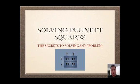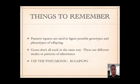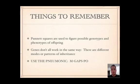Solving Punnett squares — the secrets to solving any problem. Things to remember: Punnett squares are used to figure out possible genotypes and phenotypes of offspring. Genes don't always work the same way; there are different modes or patterns of inheritance.